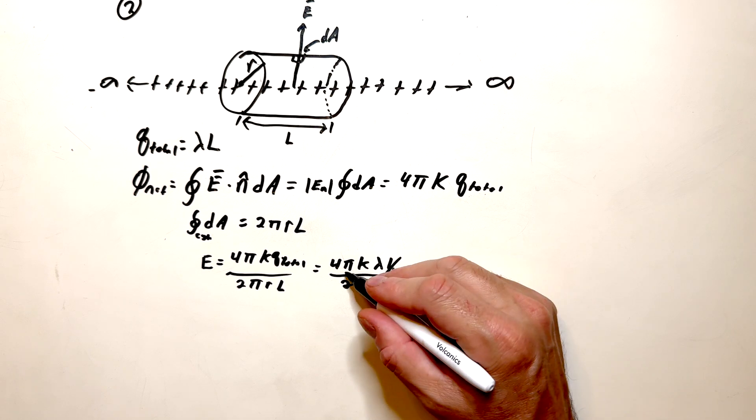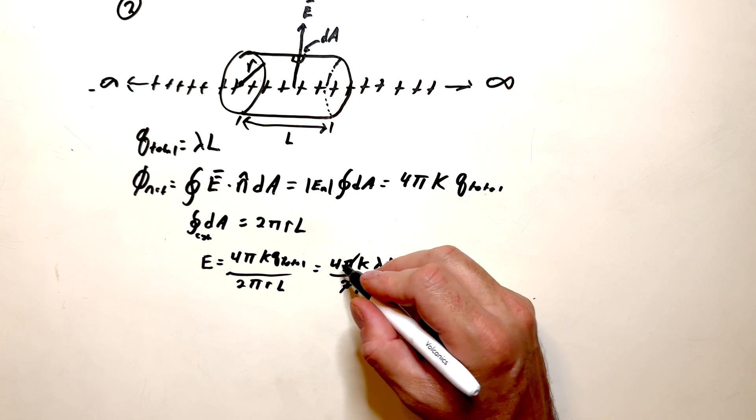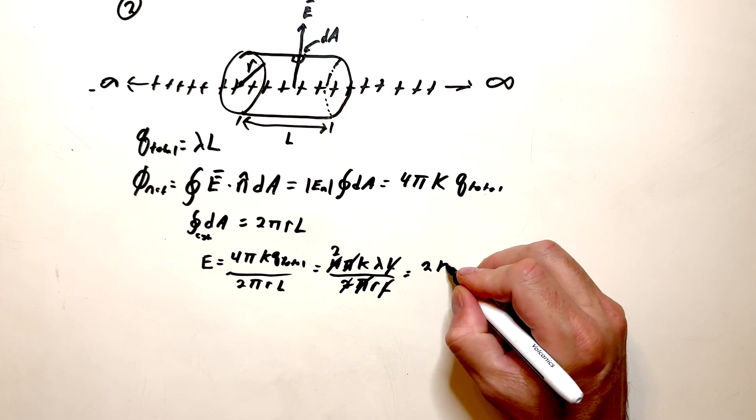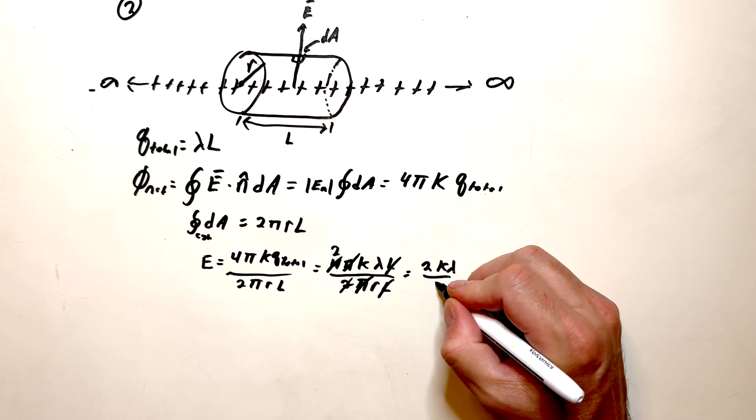And we get 2k lambda over r. And I think that's pretty much it.